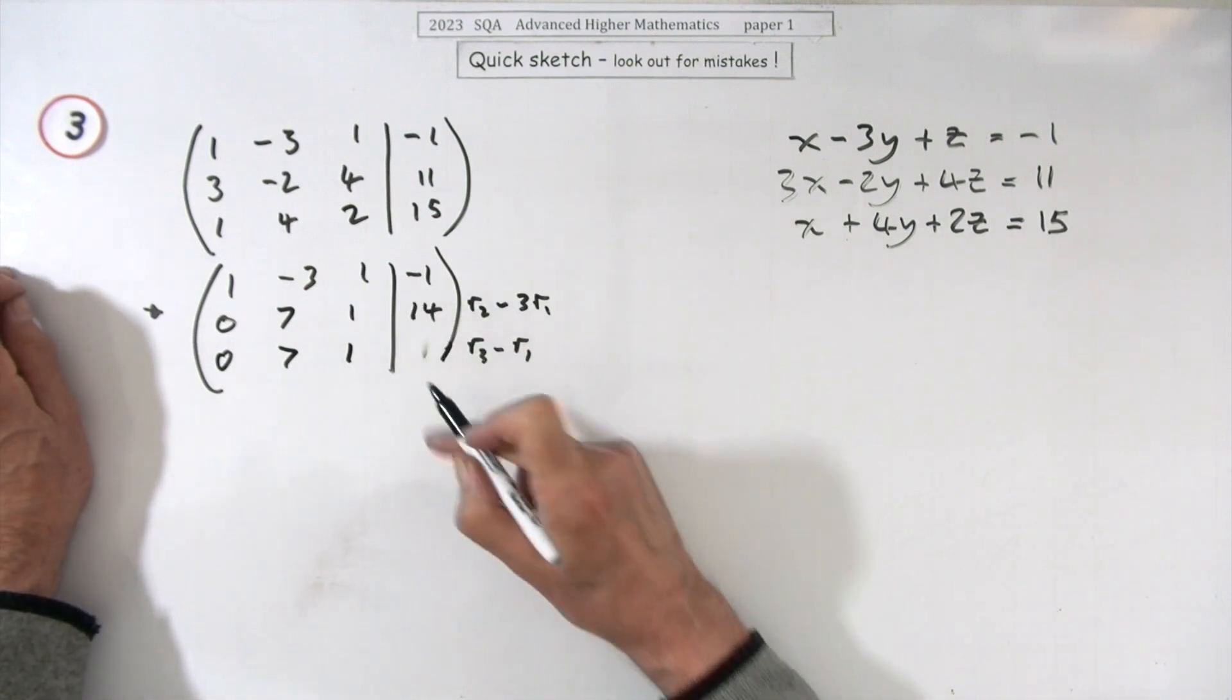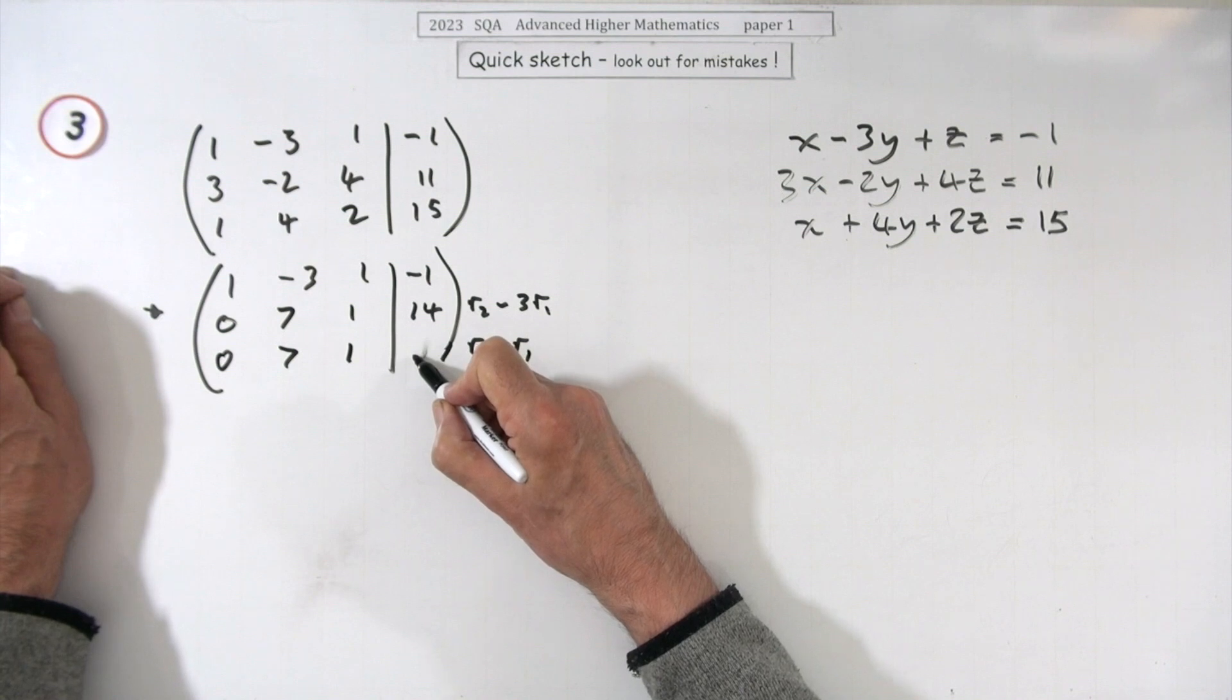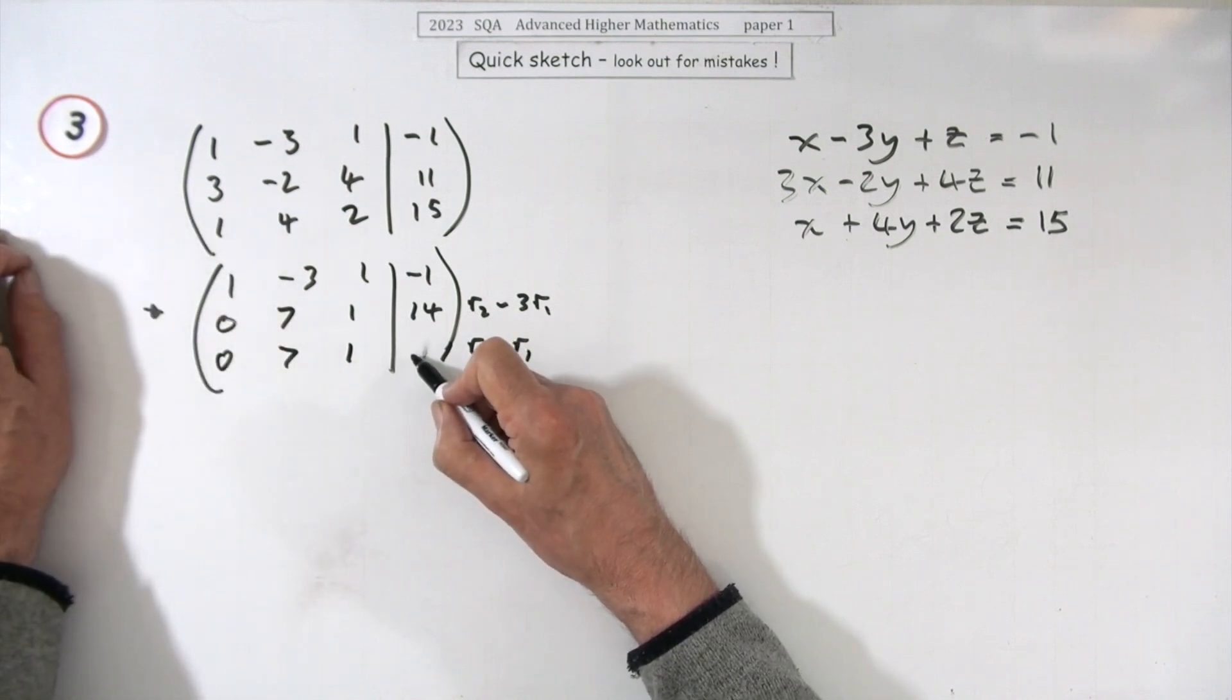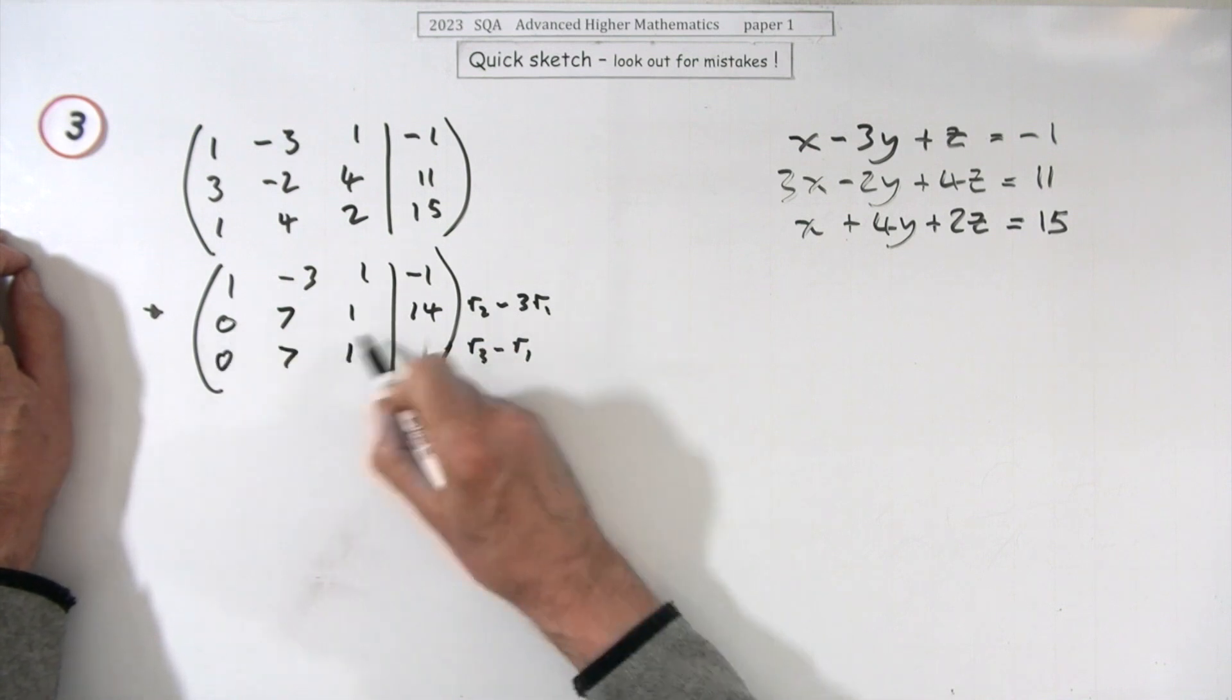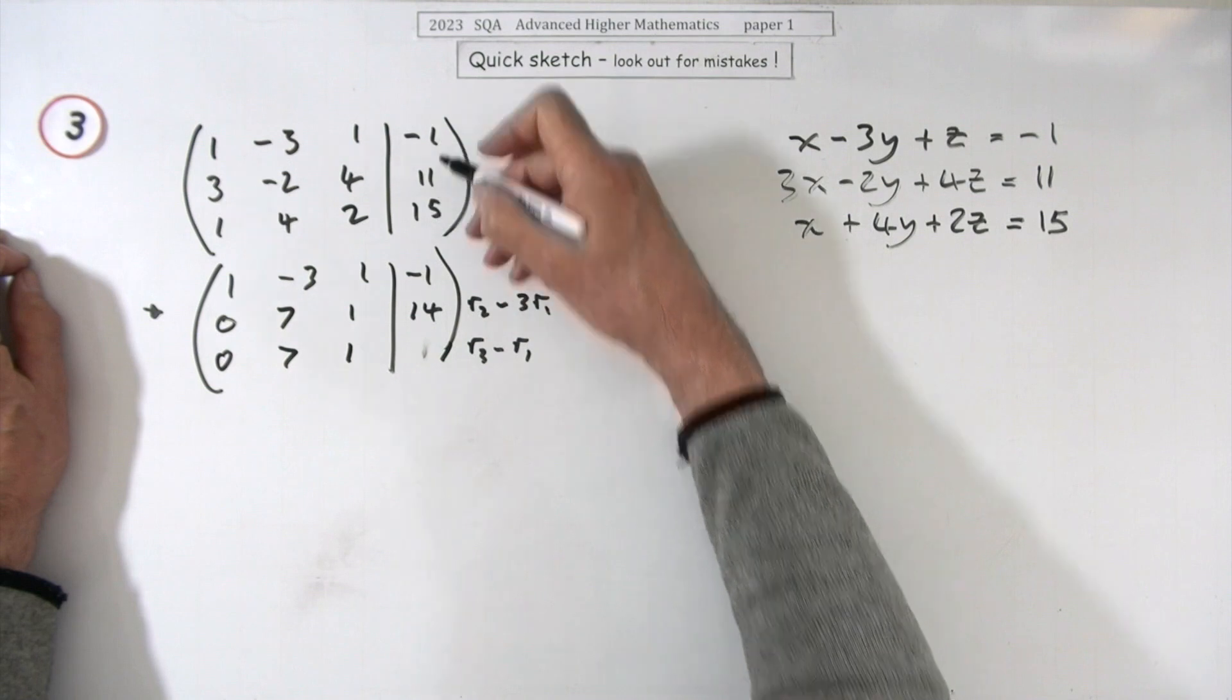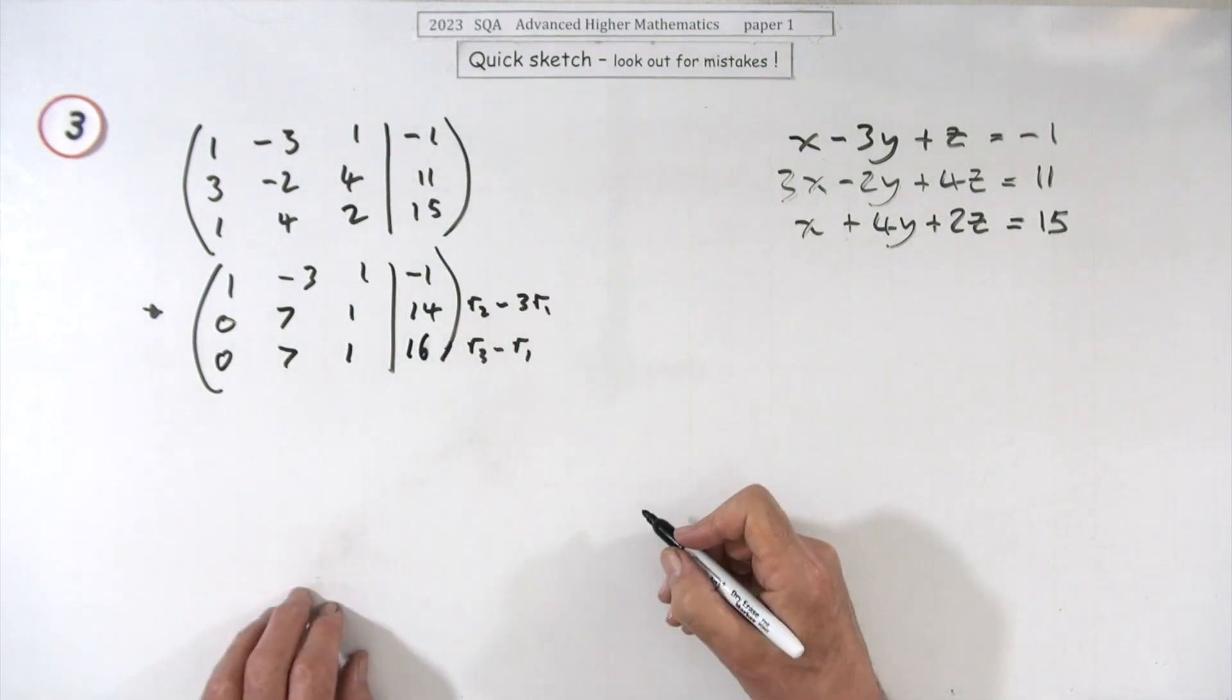It all comes down to this number now. Cliffhanger: if that's fourteen, you've got redundancy because you've only got two. If that's not fourteen, you've got inconsistency because you can't have the same calculations giving different answers. Fifteen, sixteen. That's it, you've got an inconsistency.